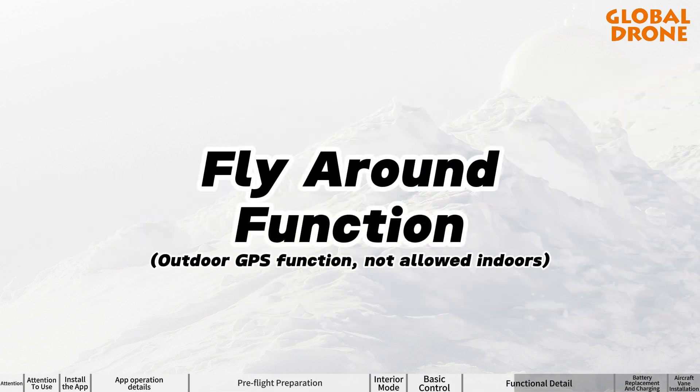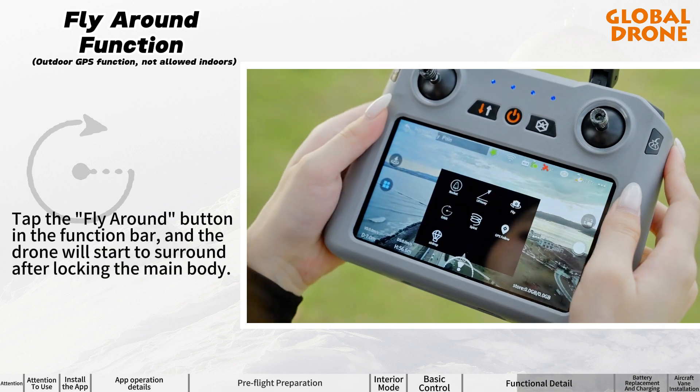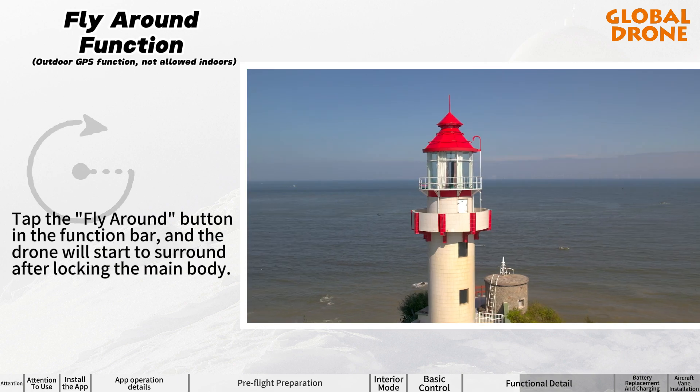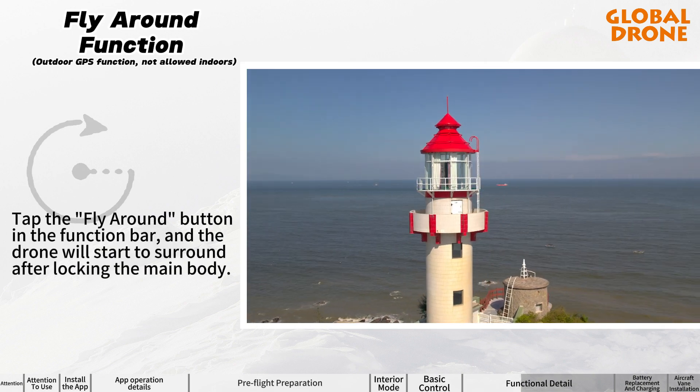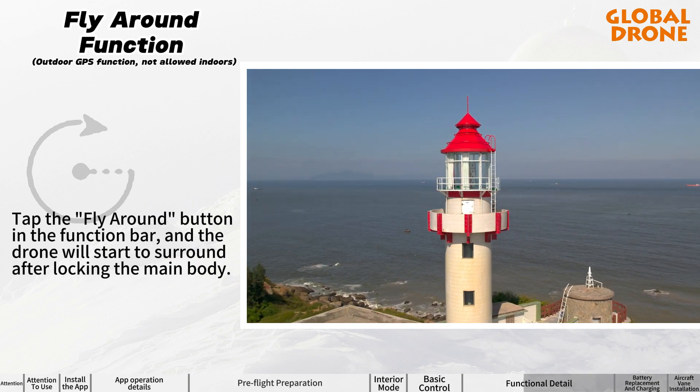Fly around function: tap the fly around button in the function bar and the drone will start to surround after locking onto the main subject.